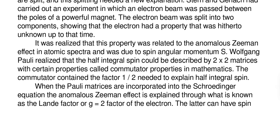Wolfgang Pauli realized that the half-integral spin could be described by 2x2 matrices with certain properties called commutator properties in mathematics. The commutator contained the factor half needed to explain half-integral spin. When the Pauli matrices are incorporated into the Schrödinger equation, the anomalous Zeeman Effect is explained through what is known as the Landé factor, or G equals two factor of the electron.